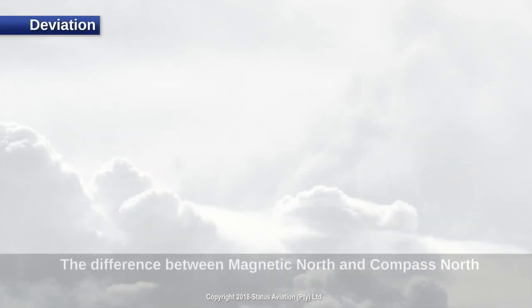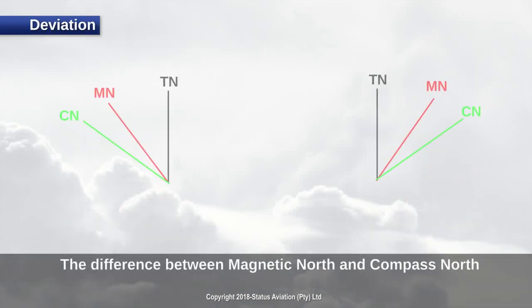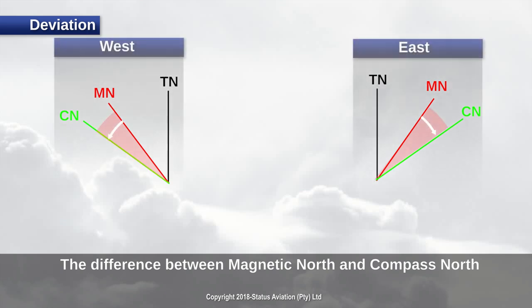Next we will look at deviation. Deviation is simply the difference between magnetic north and compass north. Deviation is measured from magnetic north to compass north. Direction is also indicated. For example, if the compass north is east of magnetic north, then deviation is said to be east and vice versa.